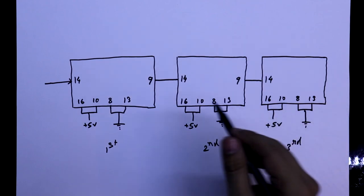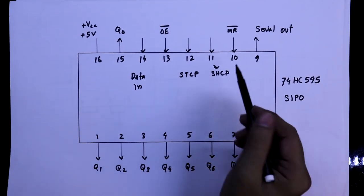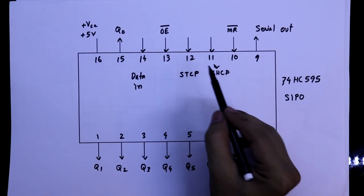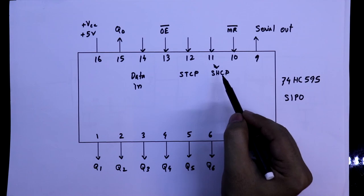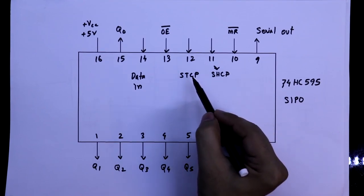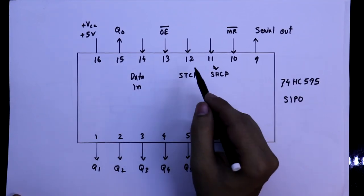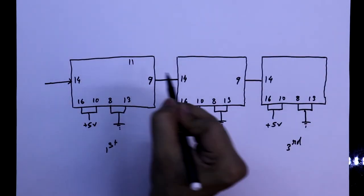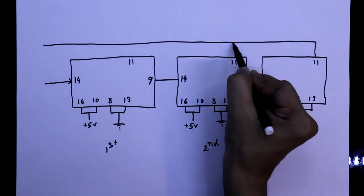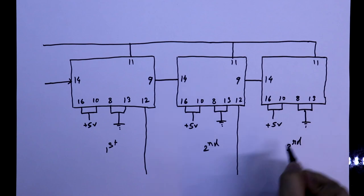So, this is the connection for the data pin and now see pin number 11 and 12. This is shift register clock pin and it is storage register clock pin. We have to connect them all. We have to connect all the pin 11 and all the pin 12.